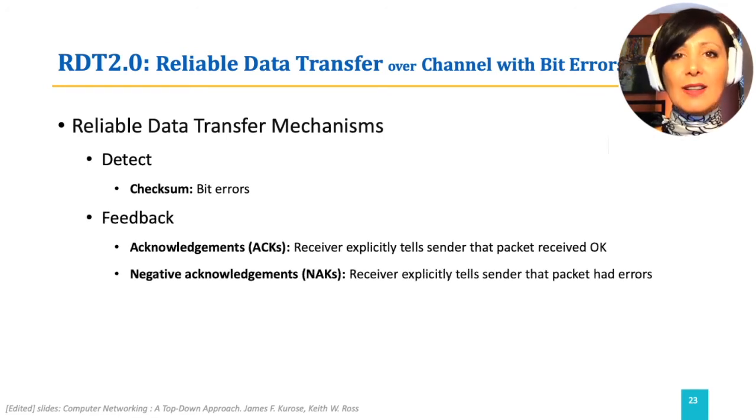Using ACK or Acknowledgement, receiver explicitly informs the sender about receiving correct expected packets. In NAK or Negative Acknowledgement, receiver explicitly tells the sender that the packet had errors.